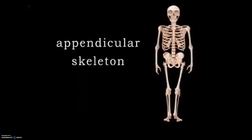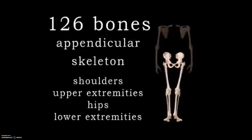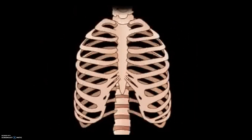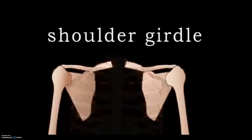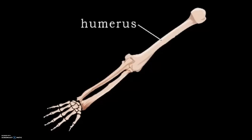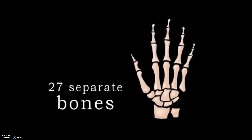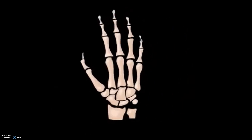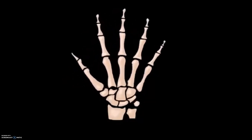The appendicular skeleton consists of the bones of the shoulders, upper extremities, hips, and lower extremities. The bones of the upper extremities, or arms, are connected to the axial skeleton via the shoulder girdle, which consists of the scapula, or shoulder blade, and the clavicle, or collar bone. The arm itself is composed of the humerus, or upper arm, and the radius and ulna of the forearm, plus the wrist and hand, which consists of 27 separate bones. Because of this large number of small bones, our hands are capable of more movement than any other part of our body.